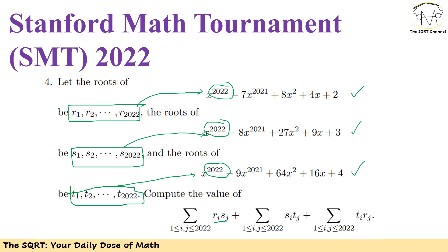The value to compute has three terms. The first term is the sigma of Ri·Sj for i and j between 1 and 2022 — so all pairwise products like R1·S1, R1·S2, up to R2021·S2022. The second term is sigma of Si·Tj, and the third is sigma of Ti·Rj. The equations have x to the power of 2022 and x to the power of 2021 as the leading terms, then nothing until x squared, x, and x to the power of 0, with different coefficients for each equation.